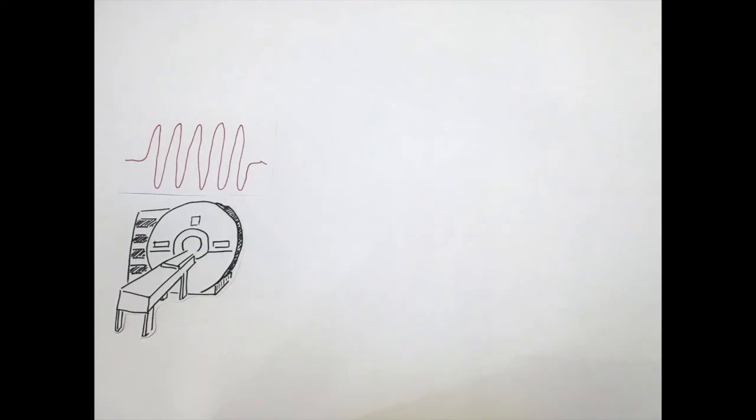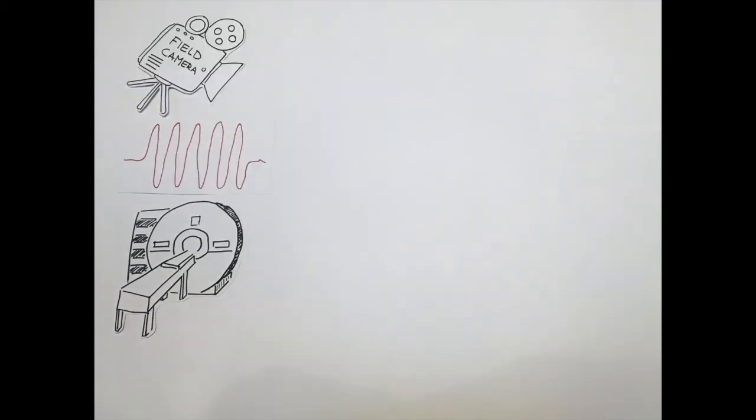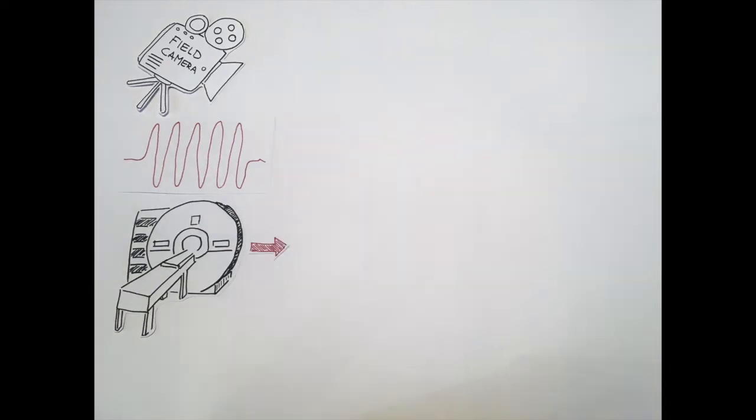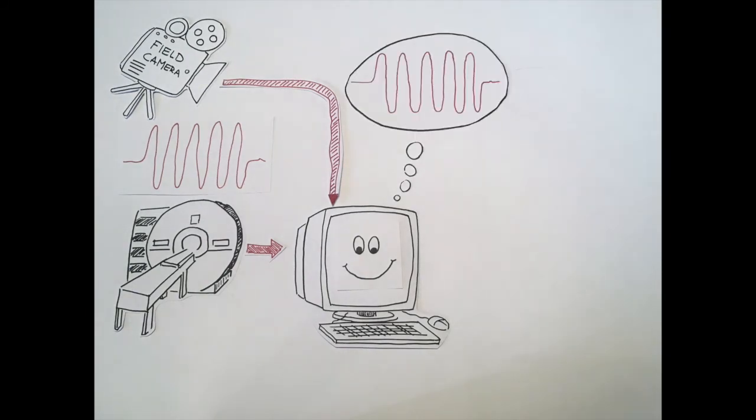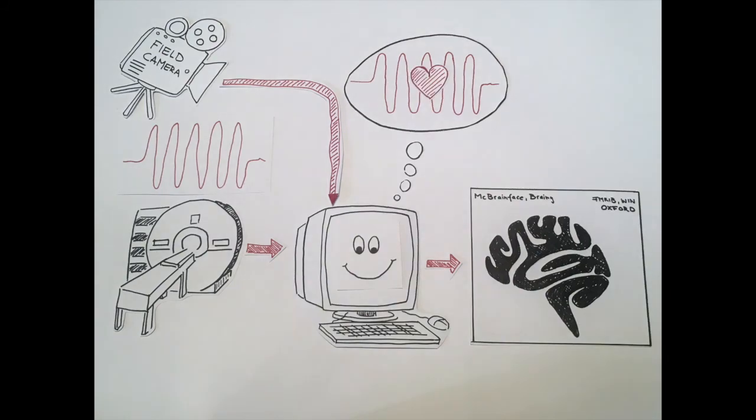One way to solve this problem is to use a field camera, which is a device that can measure the gradient magnetic fields. This information is then passed on to the image reconstruction computer, which allows it to correct for the imperfections and produce a high quality brain image.